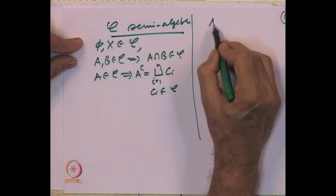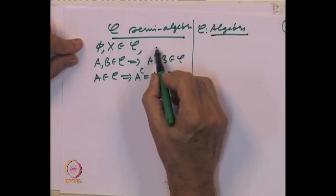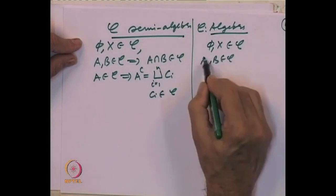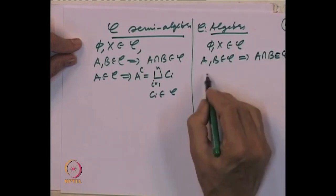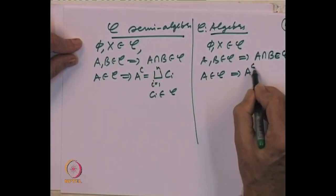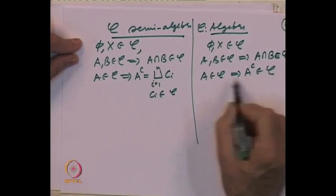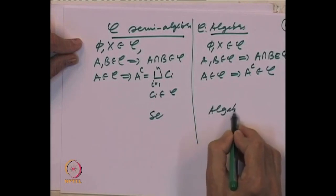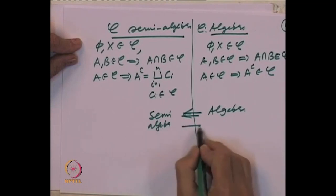Then we defined what is called an algebra. A collection C is called an algebra if: the empty set and the whole space belong to it; it is closed under intersections; and the complement of every A ∈ C also belongs to C. This is a stronger property than semi-algebra: algebra implies semi-algebra but the converse need not be true.